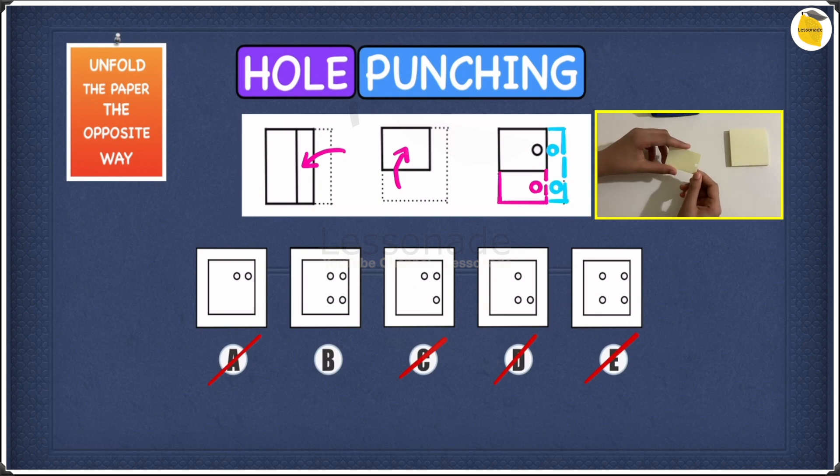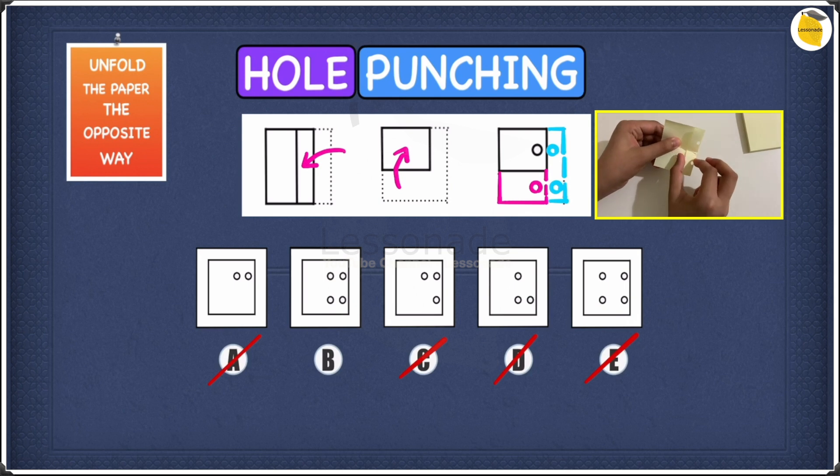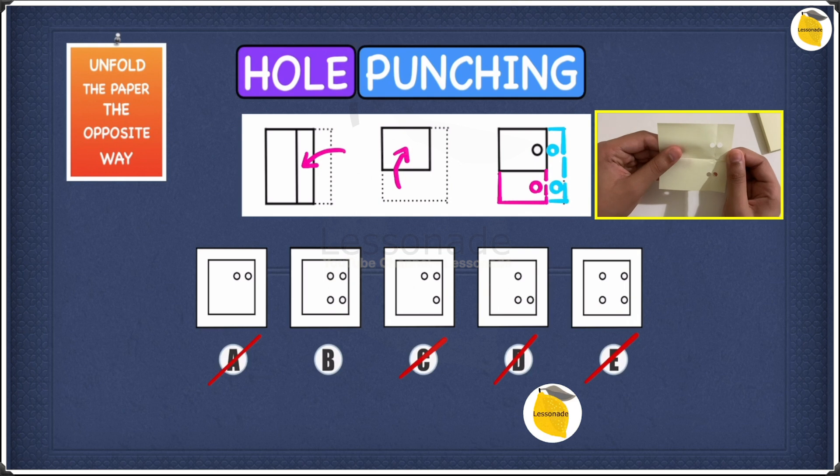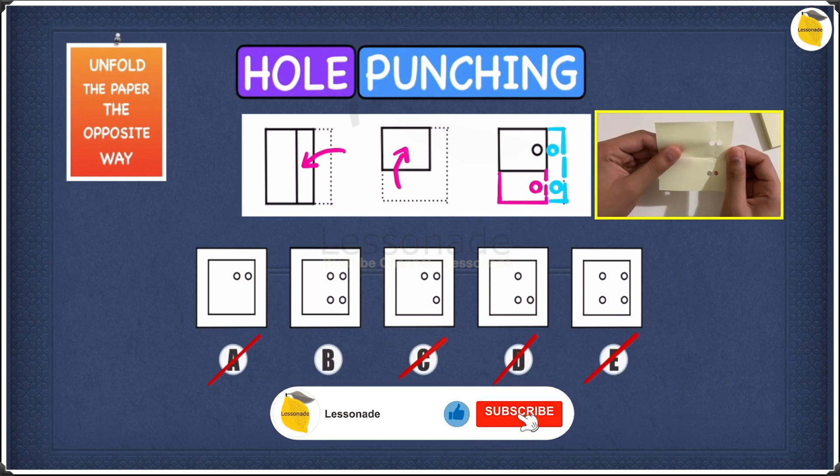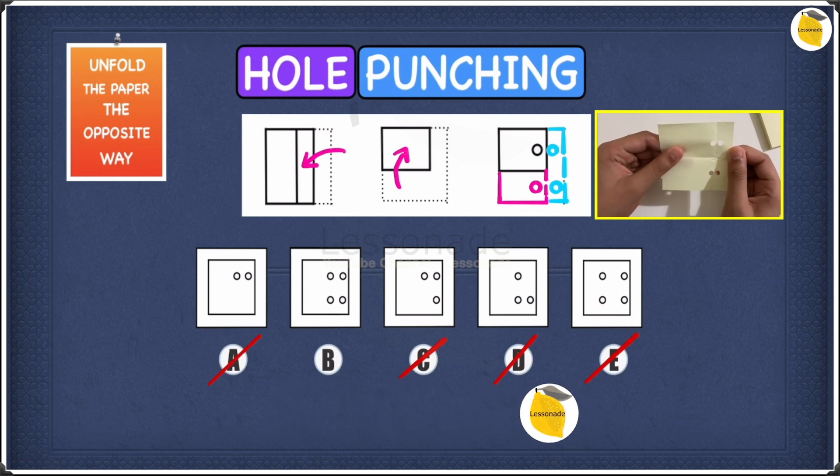And then after punching the paper, now we can unfold this paper to find our answer. So we're going to unfold this into half, and then we can remove the portion we have on the right. And as you guys could see, we have four number of holes, and the holes are positioned in the right direction, just like in B. So that means our answer to this question is B.